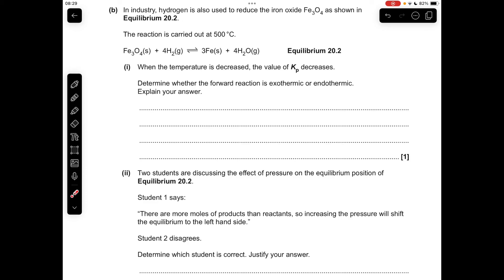Moving on to part B now. We're told that when the temperature has decreased, the value of KP for this equilibrium decreases, so what that's telling us is that the low temperature must be favoring the reverse reaction. KP decreases means that the reaction's gone backwards.